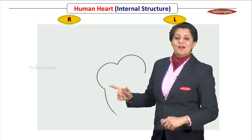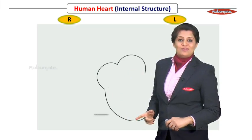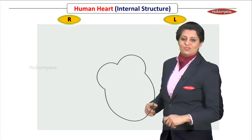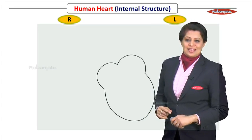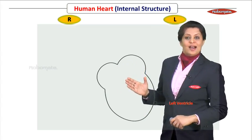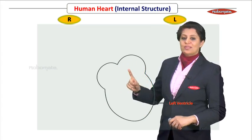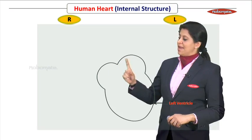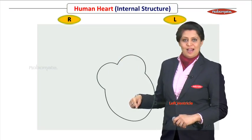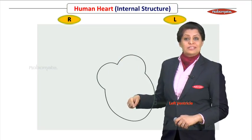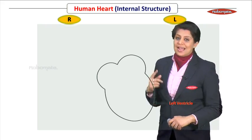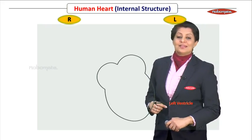Now we need to draw the lower chambers of the heart. Draw a nice curve for the right ventricle and then the left ventricle on the other side. This completes the outline of our heart. Now observe — this is the base of the heart, and down here this is the apex of the heart. The apex should be slightly tilted towards the left side — that's a structurally correct diagram.